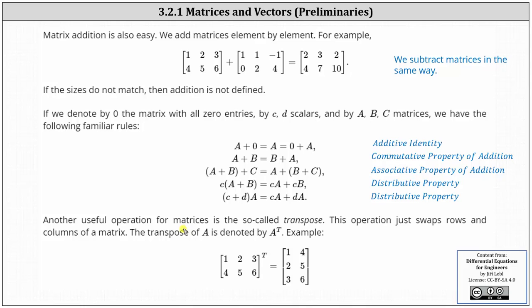Another useful operation for matrices is the transpose. This operation just swaps the rows and columns of a matrix. The transpose of A is denoted as shown here. As an example, the transpose of this two by three matrix is equal to this three by two matrix.